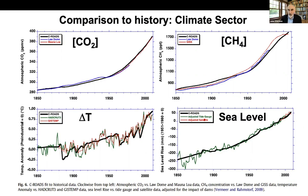I'm John Sturman, and the question that often comes up is: how do we build confidence in the En-ROADS model? How do we know that it's a reasonable basis for assessing the likely impacts of policies that might reduce future global warming?